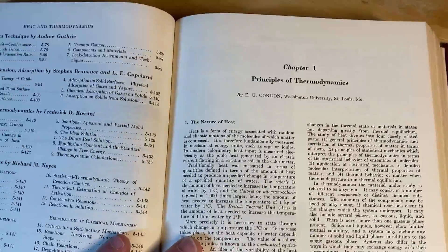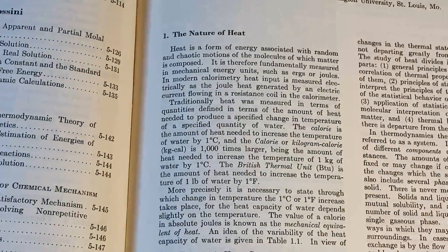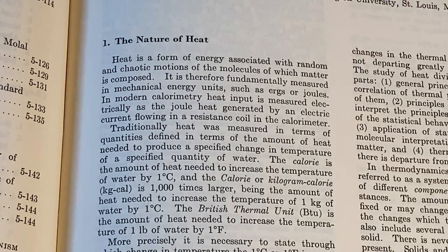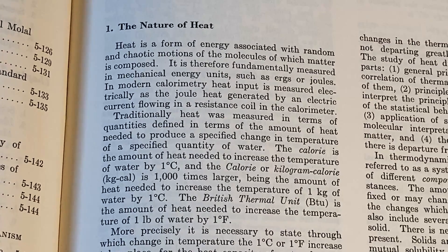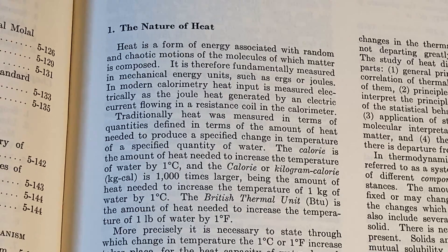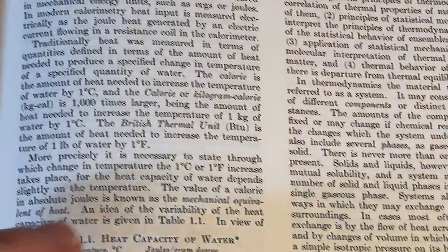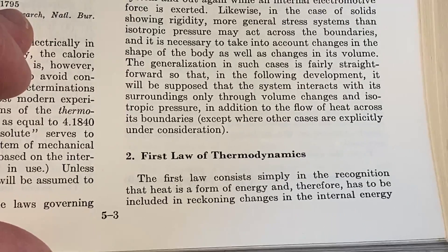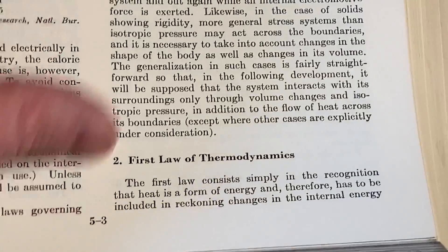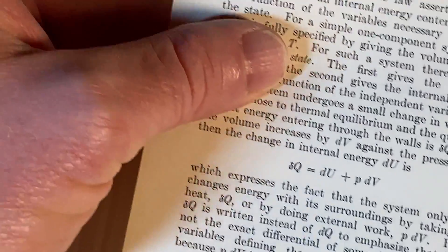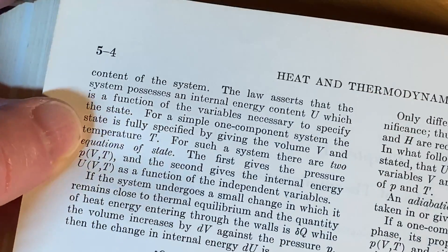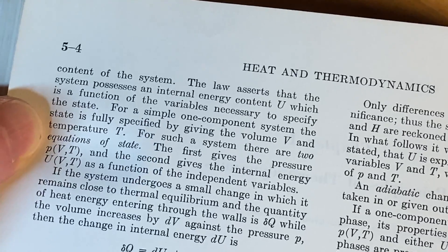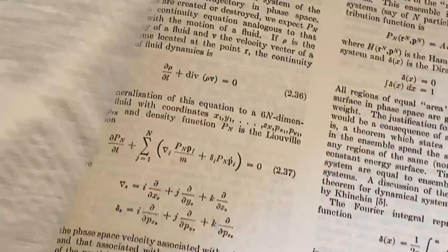It says, Principles of Thermodynamics, Chapter 1, The Nature of Heat. See what it says here. Heat is a form of energy associated with random and chaotic motions of the molecules of which matter is composed. It is therefore fundamentally measured in mechanical energy units such as ergs or joules. Cool. And here's the first law of thermodynamics. Consists simply in the recognition that heat is a form of energy and therefore has to be included in reckoning changes in the internal energy content of the system. The law asserts that the system processes an internal energy content U, which is a function of the variables necessary to specify the state. Very to the point, very direct.